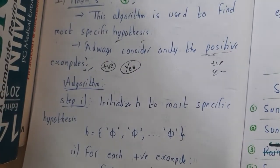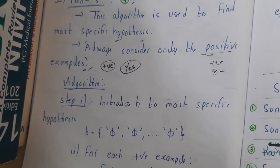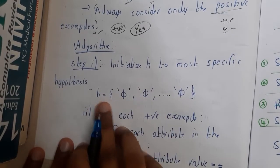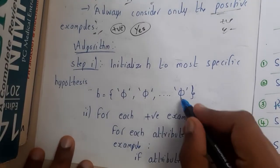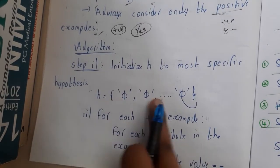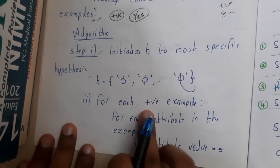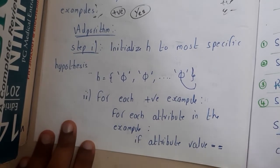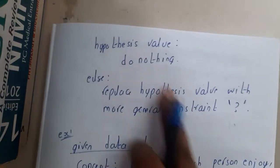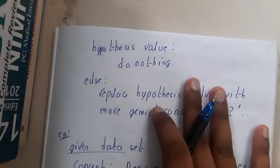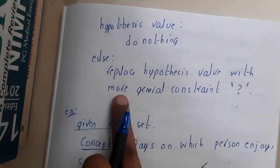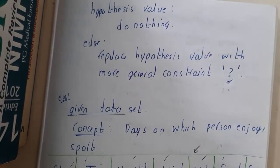For the algorithm's theoretical part, if asked for three or four marks: initially, set h to the most specific hypothesis — h = (φ, φ, ..., φ) for each attribute. Then, for each positive example, for each attribute: if the attribute value equals the hypothesis value, do not update; else replace the hypothesis value with '?' (the general hypothesis).